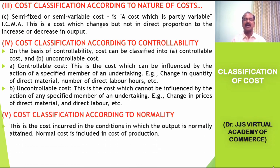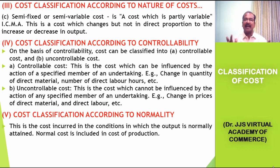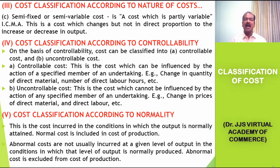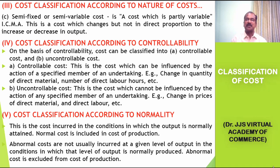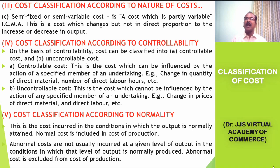The next classification of cost is based on normality. Normal cost is a cost incurred in the conditions in which output is normally attained without any problems, or the output is normally attained in the conditions already planned or established. Normal cost is included in the cost of production. Abnormal costs are not usually incurred at a given level of output in normal production conditions. When unexpected expenses are incurred, those are named as abnormal cost, and abnormal cost is generally excluded from the cost of production.